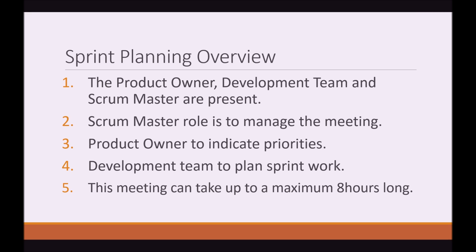Overview of the Sprint Planning Meeting. The people who need to be present in this meeting are the Product Owner, the Development Team, and the Scrum Master. The role of the Scrum Master is to manage the meeting — making sure people aren't talking about irrelevant things and that the meeting keeps moving forward. The role of the Product Owner is to indicate his priorities, and the role of the Development Team is to plan the Sprint's work.